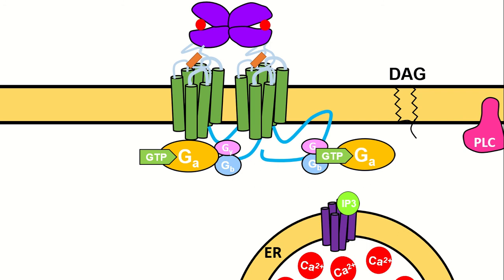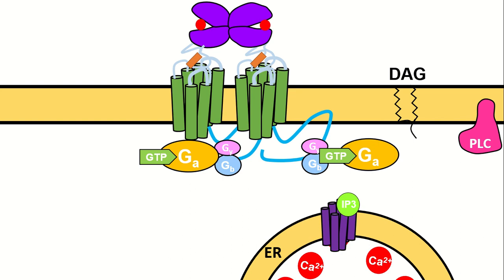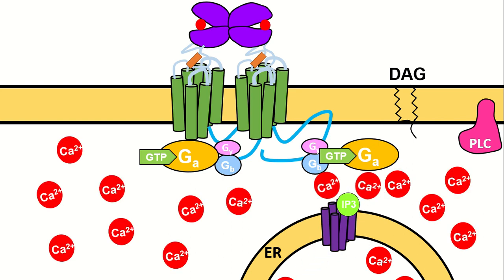IP3 diffuses across the cytoplasm to bind the IP3 receptor on the ER and cause an influx of calcium from the ER into the cytosol.